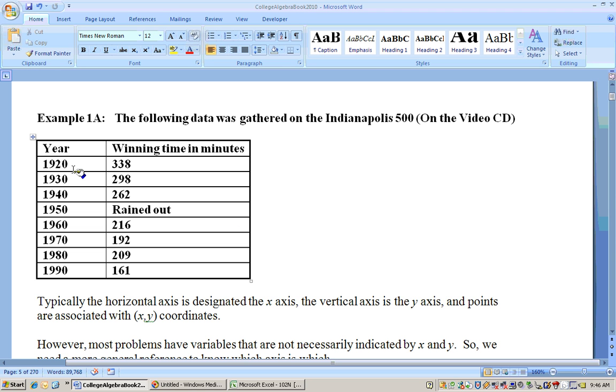Now, in this problem, it gives you the years for the Indianapolis 500 with the winning times. Like, for example, back in 1920, that was pretty much the first Indianapolis 500. The winning time was actually 3.38. In 1930, it was 2.98. In 1940, 2.62. In 1950, it was rained out, and so on.